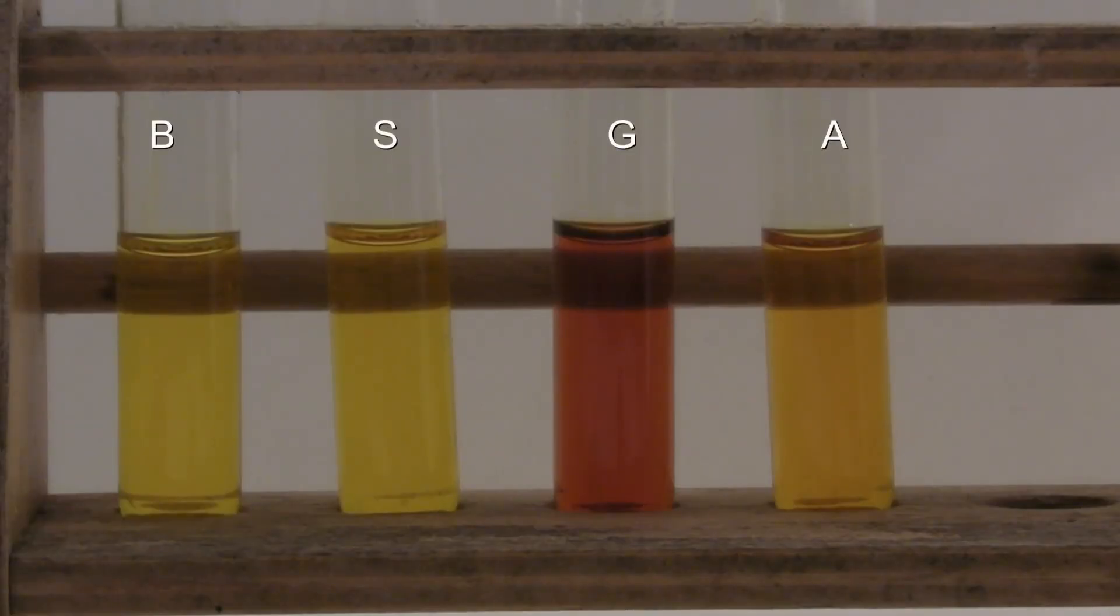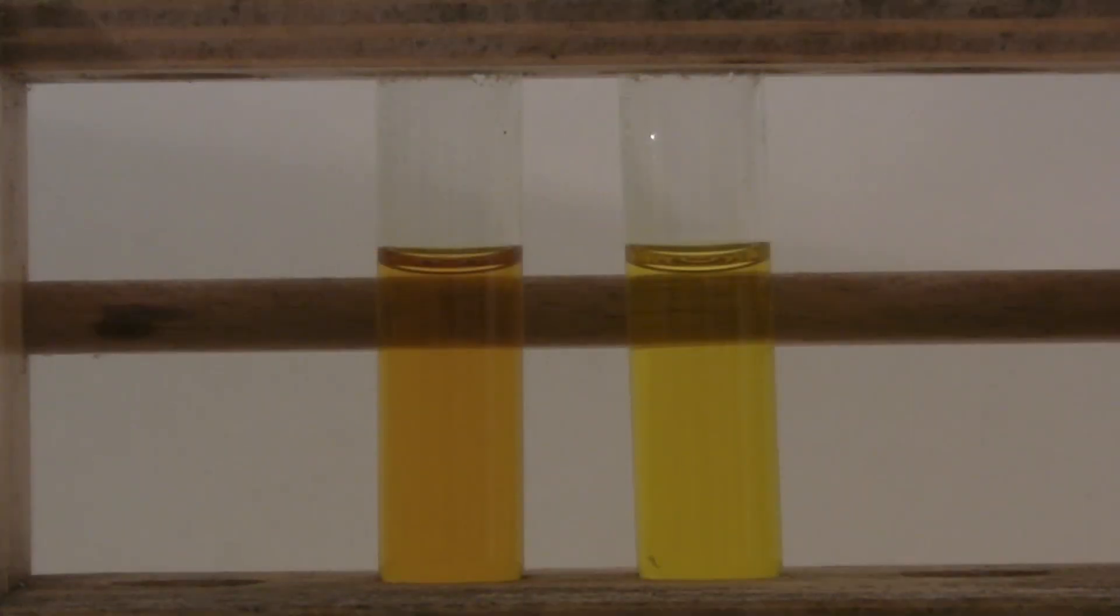The result corresponds to the expectations. The blank and the saccharose didn't react, because the latter is not a reducing sugar. The glucose is a reducing sugar, which is why it has reacted obviously. The acetaldehyde was only present with a low concentration, which is why the color is not as strong. But it can be seen well in comparison to the blank.